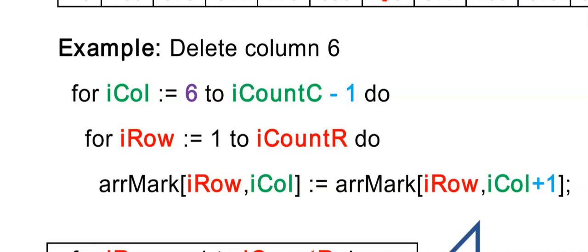I want to remove a column. So I will start with the for loop for the column. And I want to remove column 6. So therefore, I start at column 6. And remember, we don't want to go all the way to the end. We want to go to iCountC minus 1.